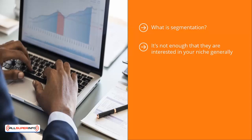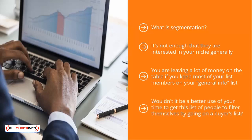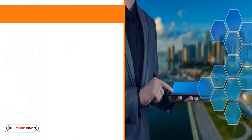You can also segment people based on their purchasing behavior. You are leaving a lot of money on the table if you keep most of your list members on your general info list. You can send update after update to this general list, and the majority of people are probably not going to buy. Wouldn't it be better to get people to filter themselves onto a buyer's list? Once they are on your buyer's list, you can send better crafted, more targeted emails to get them to buy.